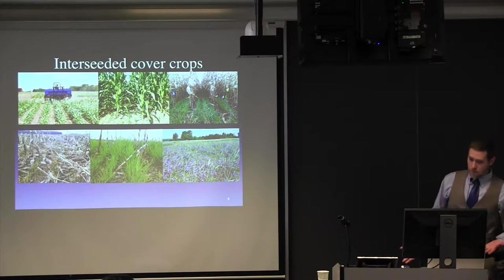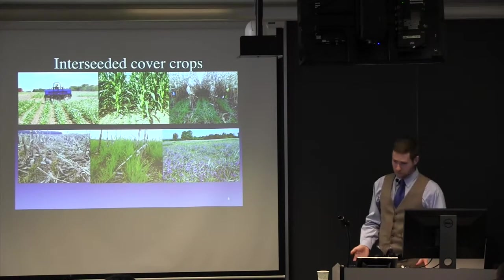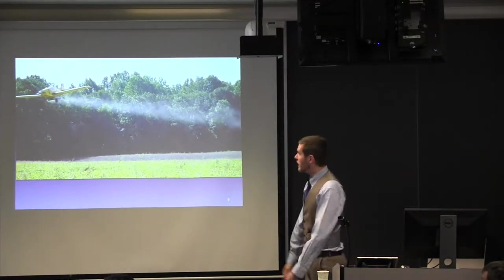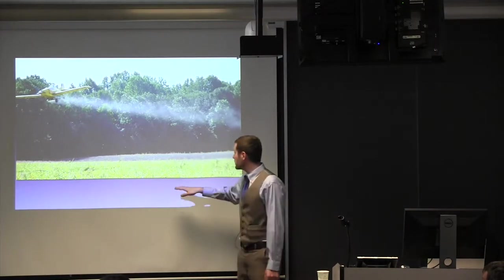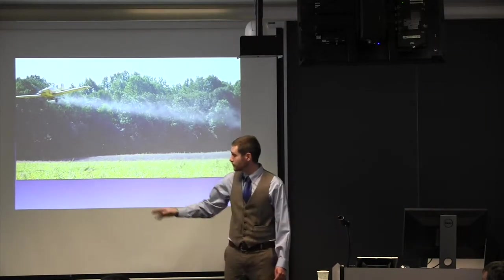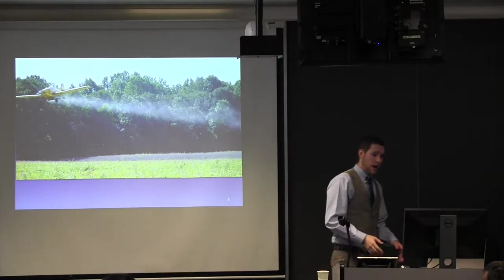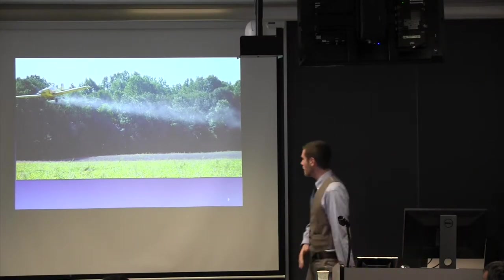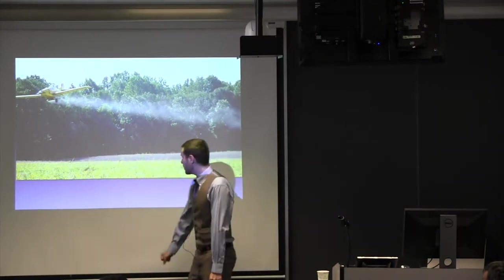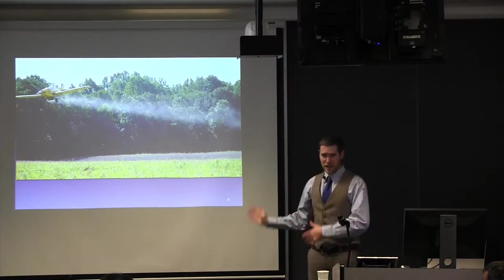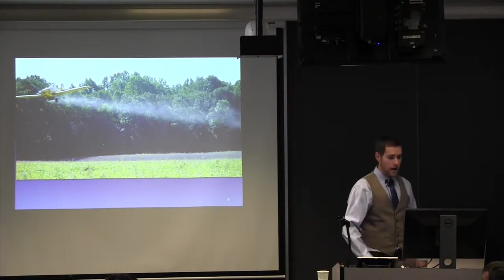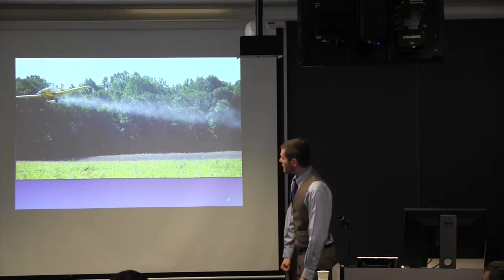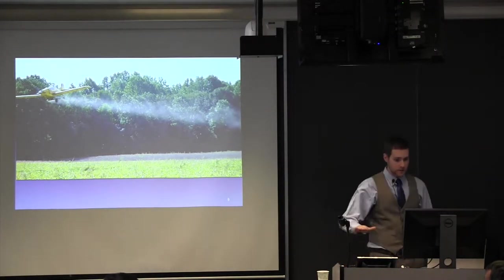So there are a couple methods that people use to do interseeding. And I just want to go over a couple of them. This is aerial broadcasting red clover seeds into soybean. Now there are some drawbacks with this. A lot of the seeds, it's possible they're not going to actually hit the ground. They might get caught up in some of the plant. You're very much at the mercy of the wind and the rain. So if you spread your cover crops by broadcasting, and you don't get rain for a couple of weeks, your establishment is going to be way low.